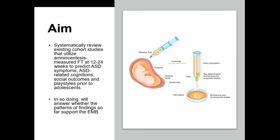The aim of the systematic review was to look at cohort or longitudinal studies that looked at fetal testosterone from 12 to 24 weeks to predict later behavior, especially pertaining to autism symptoms, autism-related cognitions, social outcomes, play styles, and other behavioral indices. In so doing, we will see how well the extreme male brain theory of autism is faring in light of recent research.